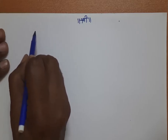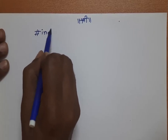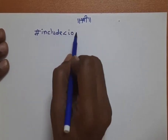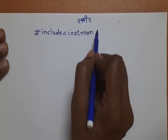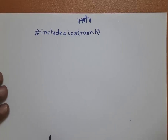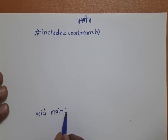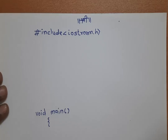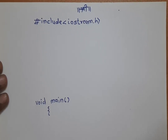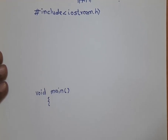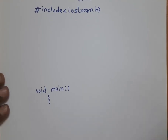In C++ we start with #include <iostream.h>, then the main program starts with void main() with open and close brackets, then open curly bracket and close curly bracket. Inside these curly brackets we write our code.